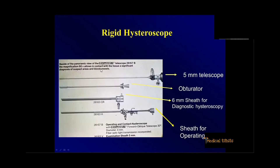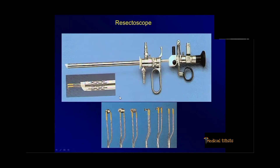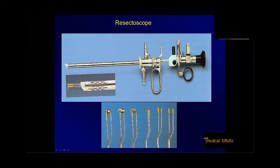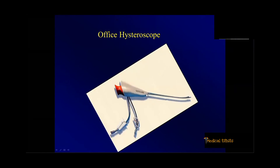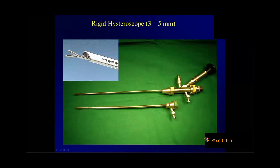This is the typical picture of a routine rigid hysteroscope. It consists of a scope which is put in the inner sheath, and if you are using continuous flow, you also use an outer sheath. The diameter was initially 8 mm, now we have 7 mm, and we can use a loop for different types of procedures with continuous flow. There is also the office hysteroscope, which is very thin, but very costly and easily damaged — costing more than 6 lakhs. Most commonly what I use is the rigid hysteroscope combined with the operative outer sheath, which is less than 4 mm.